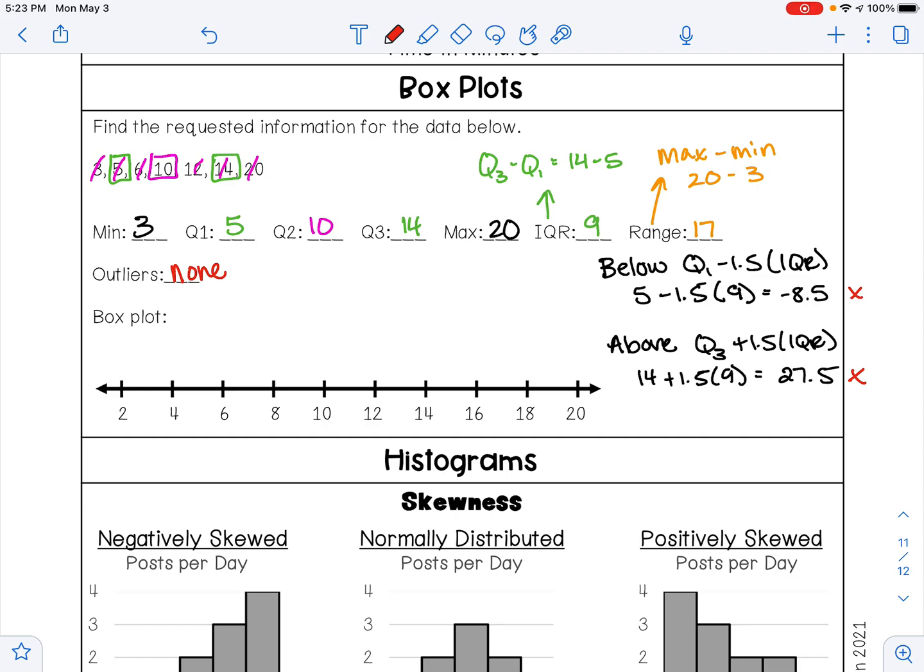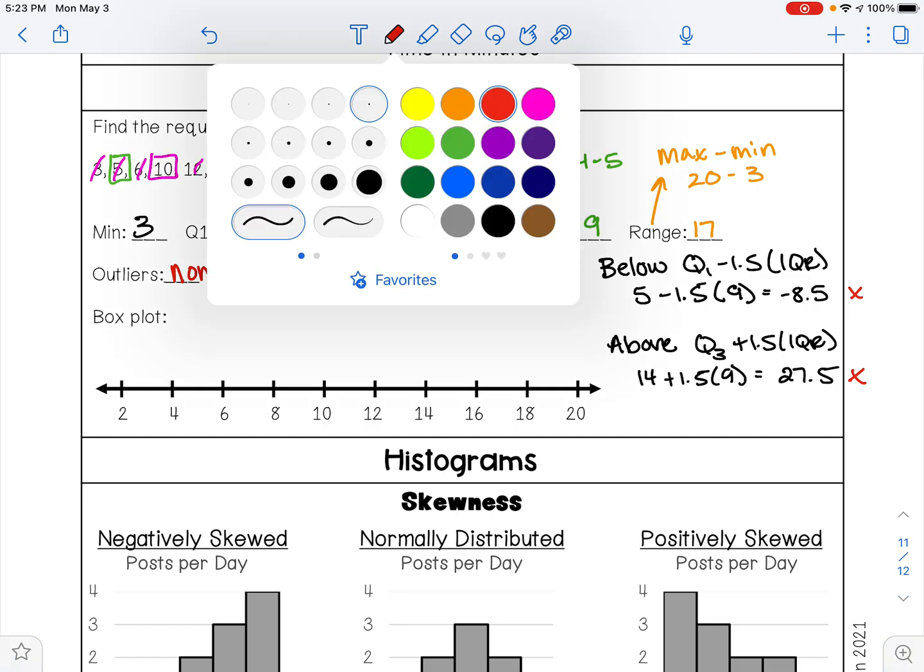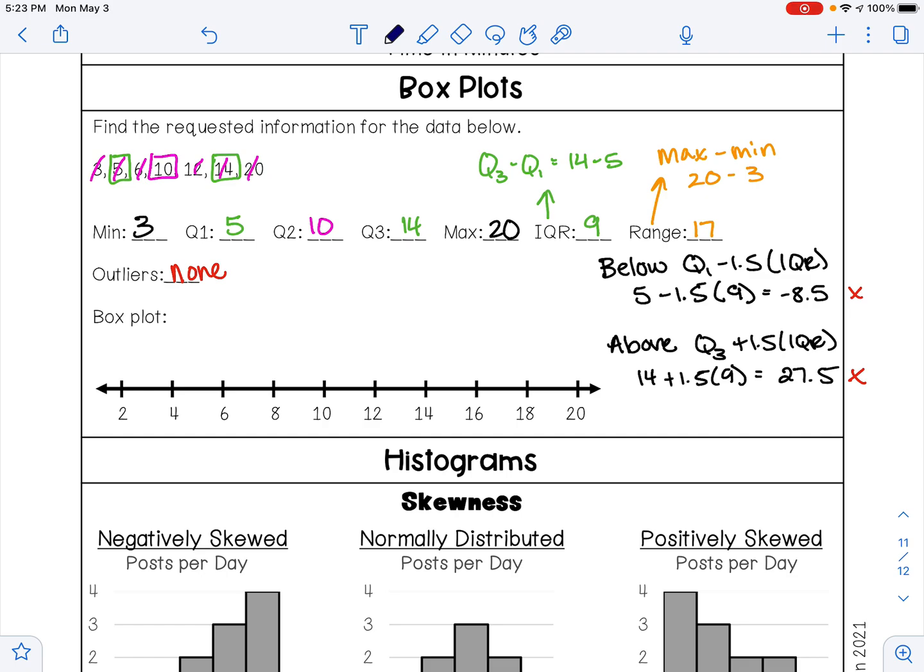Once we calculate and look for outliers, we can go ahead and draw our box and whisker plot. So my minimum value is at three, Q1 is at five, Q2 is at ten, Q3 is at fourteen, and our maximum is at twenty. You want to draw a box from Q1 to Q3, your median Q2 gets a vertical line, connect them into the box, and connect the max to the box, and that is a box and whisker plot.